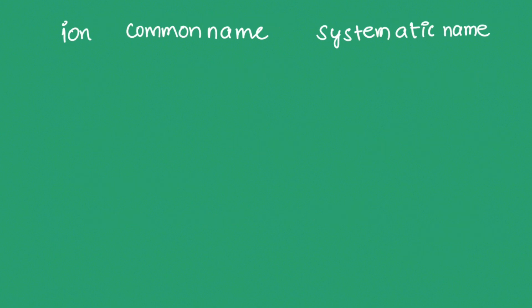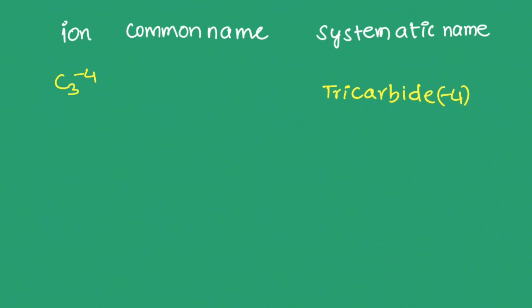Another type of carbide ion is C₃⁴⁻. There is no common name; the systematic name is tricarbide(4−). One example of this C₃⁴⁻ carbide is magnesium carbide (Mg₂C₃).